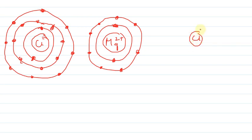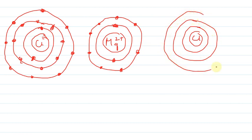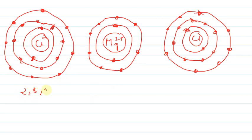Similarly, for the second Cl⁻ ion, the same structure applies: 1st shell, 2nd shell, and 3rd shell — with 2 electrons, 8 electrons, and 8 electrons respectively. So this is the complete atomic structure formed for MgCl2. Chlorine's electronic configuration becomes 2,8,8. I hope this solution was understandable. Thank you for watching the video.